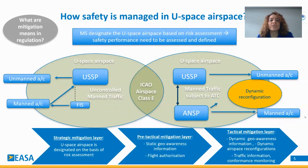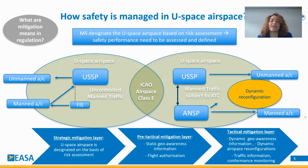This is in order to provide information to U-Space, which is then able to provide traffic information to the UAS operators in order to avoid conflict with manned aircraft in that portion of airspace. The same applies to Class E airspace because it is not controlled by ATS providers.